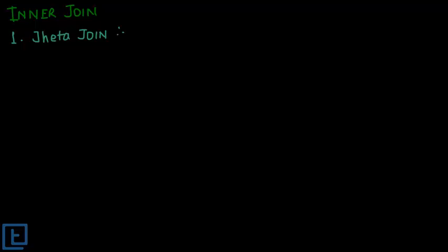Now let's understand inner join. We have three kinds of inner join as we discussed, depending upon the joining condition. The first one is theta join. Theta join is represented as follows: if relations r1 and r2 have to be joined, we write a join symbol, then give a theta — that is the joining condition — and then the relation r2. So this theta is basically the joining condition.